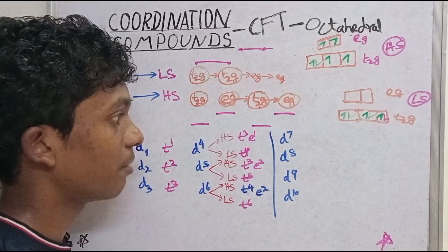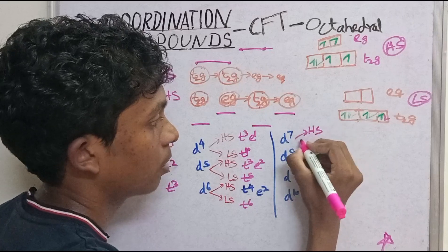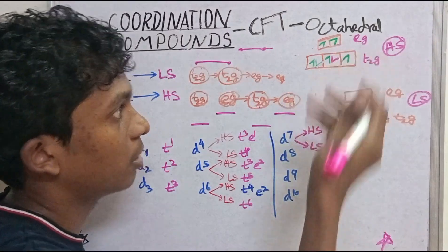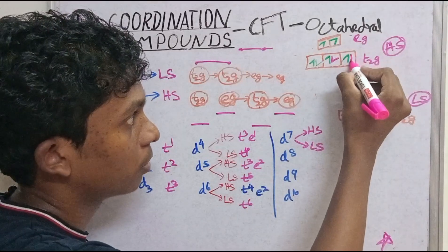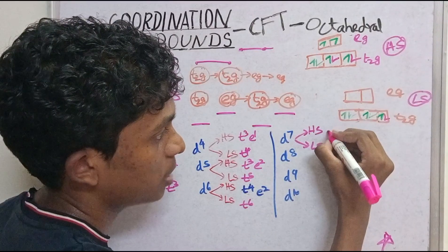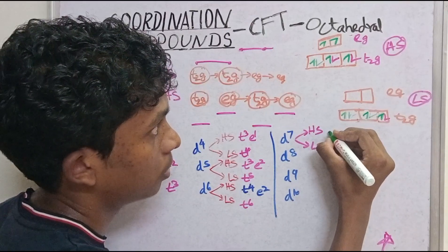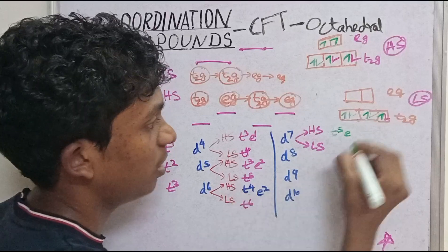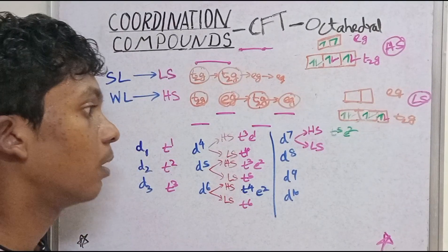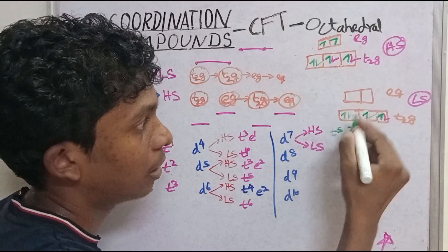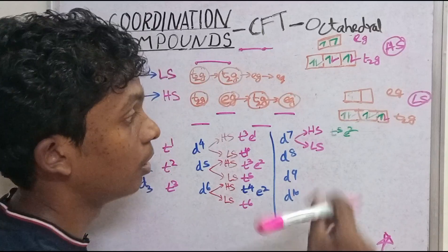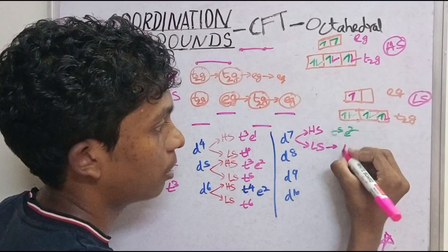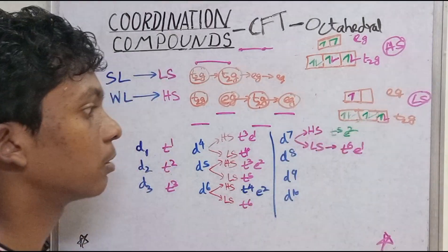D7: high spin D7 gives T2G⁵ E2, low spin D7 gives T2G⁶ E1. D8 gives T2G⁵ E2 for high spin and T2G⁶ E1 configuration is noted. For D9 low spin, T2G⁶ E1 is added. Now let's talk about D8 and D10. D10 is also related to D8.